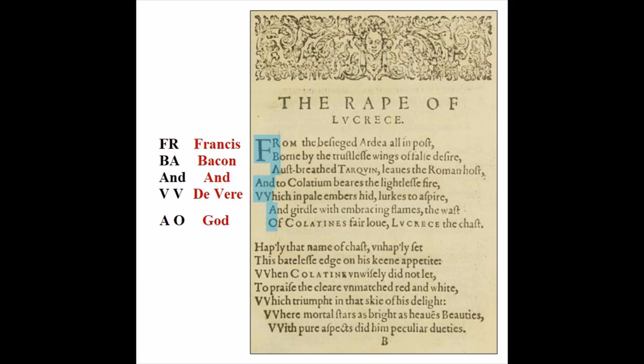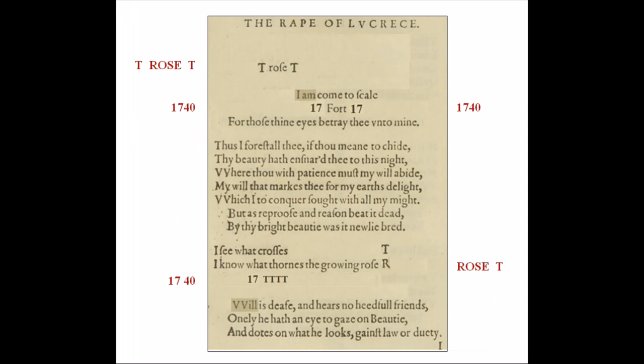If you've been following these videos, you know I've shown many examples, particularly in the sonnets, of a message that reads God, De Vere, and Rosy Cross, or Gold Rosy Cross. And here we have God, De Vere, and Francis Bacon, who is believed to have been leader of the Rosicrucians. There are Rosy Cross codes in Lucrece, explained in Video 40, which is interesting because this is nearly 20 years before the Rosicrucians formally announced themselves.